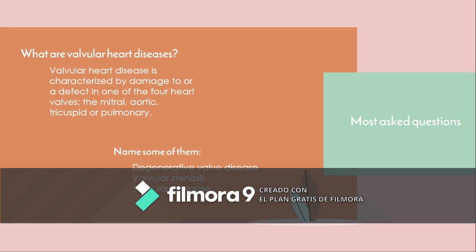Now, must-ask questions. What are valvular heart diseases? Valvular heart disease is characterized by damage to or a defect in one of the four heart valves — the mitral, aortic, tricuspid, or pulmonary. One of the most common valvular heart diseases is bacterial endocarditis, which is an infection of the inner lining of the heart muscles and heart valves.